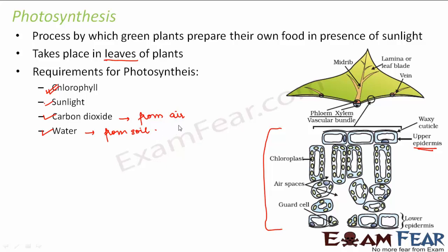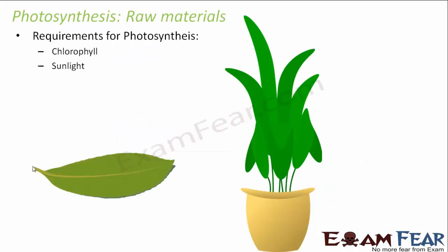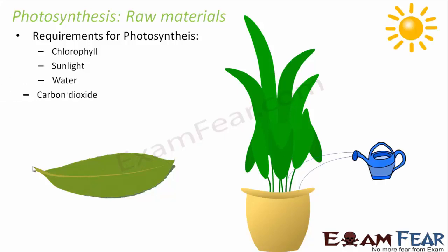Now let us talk about stomata. Carbon dioxide will be obtained from air through stomata. The food prepared is stored in the form of starch, which is a polysaccharide — that means too many glucose molecules together form starch. The raw materials — requirements for photosynthesis — are chlorophyll, sunlight, water, and carbon dioxide.